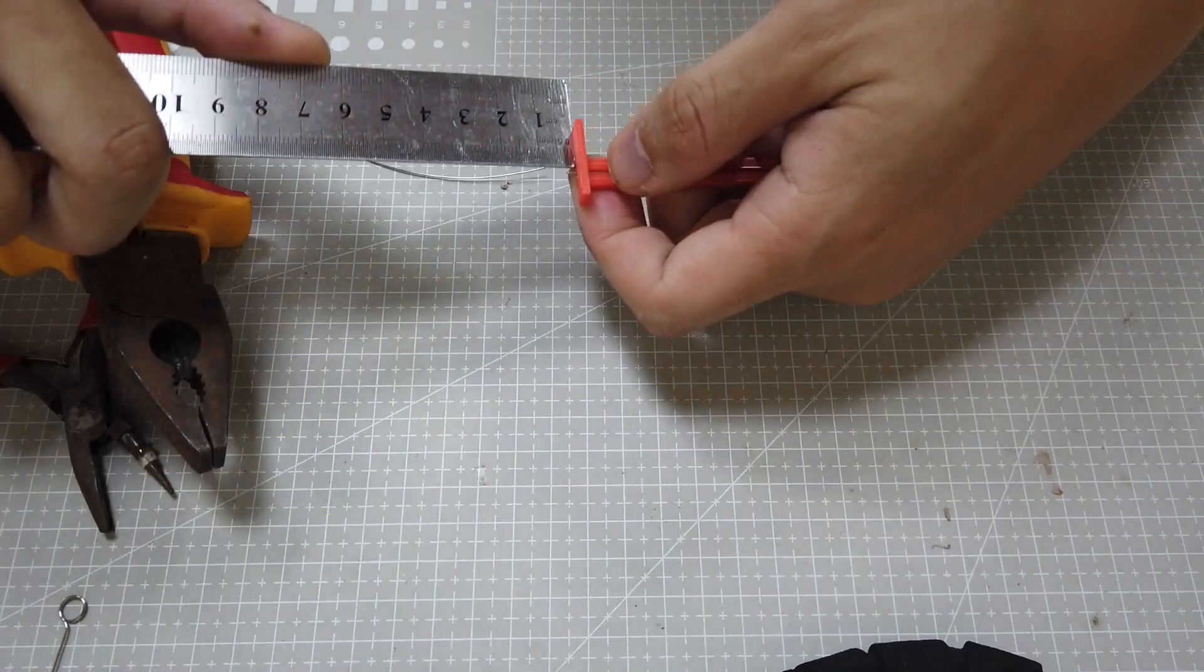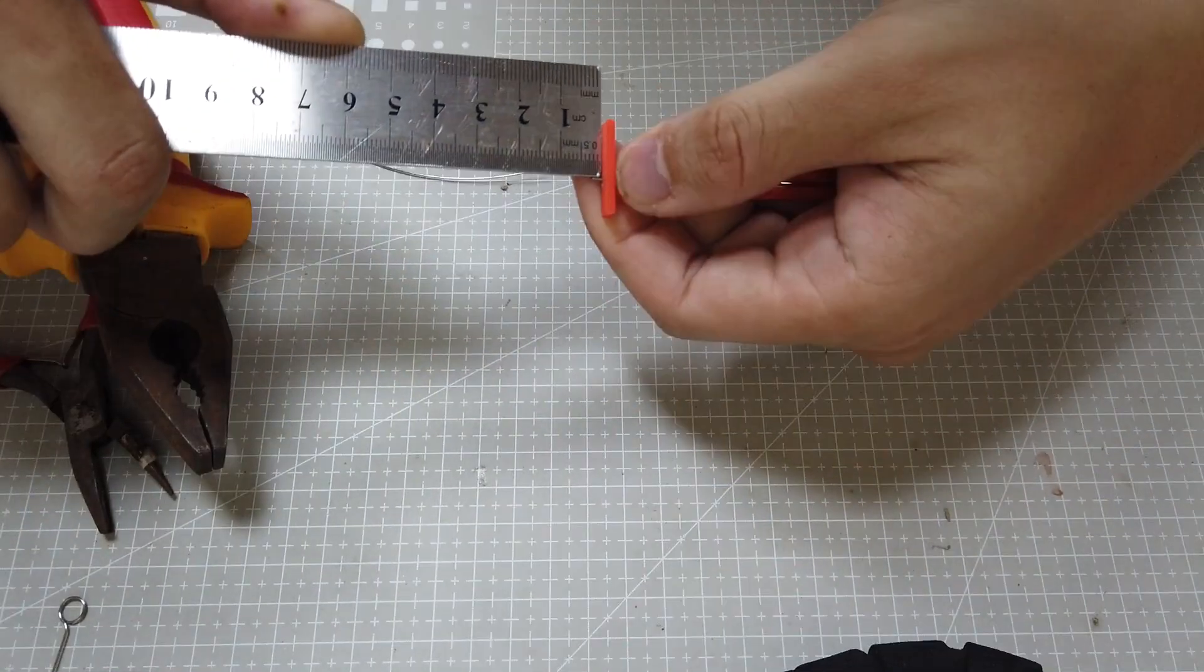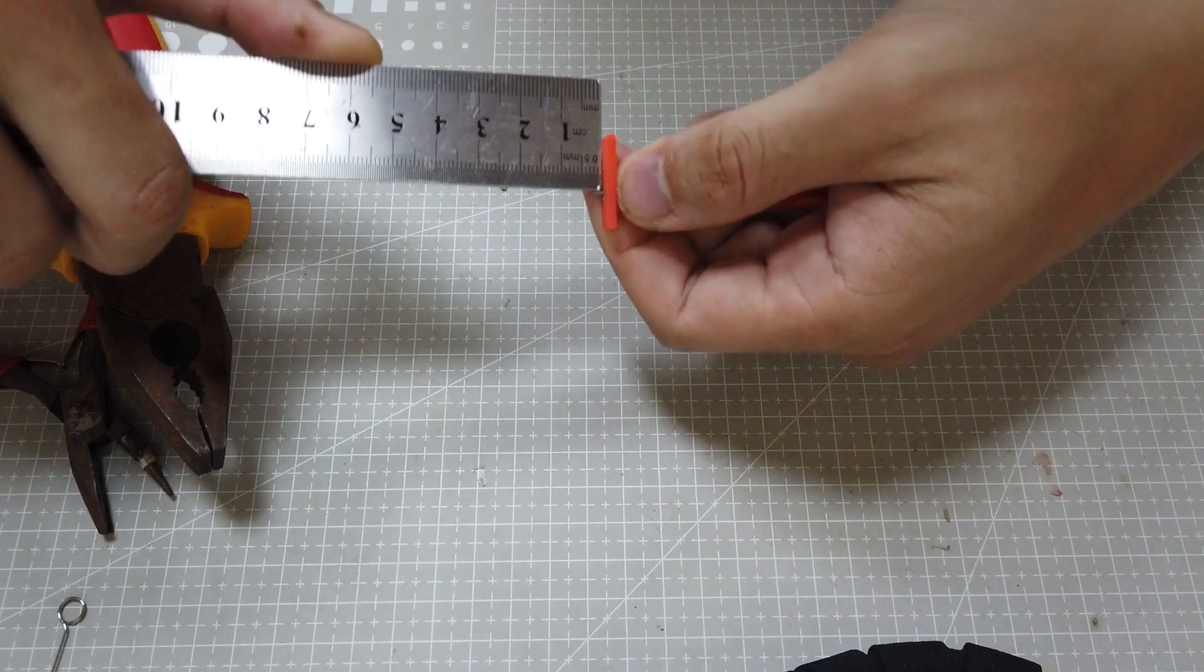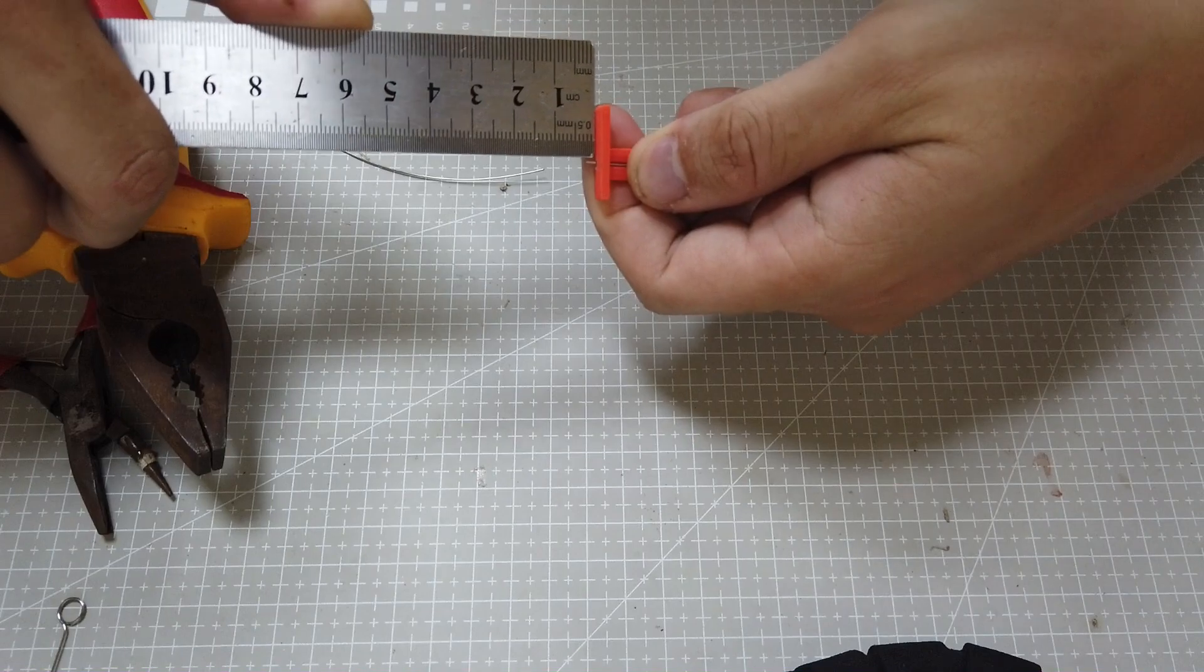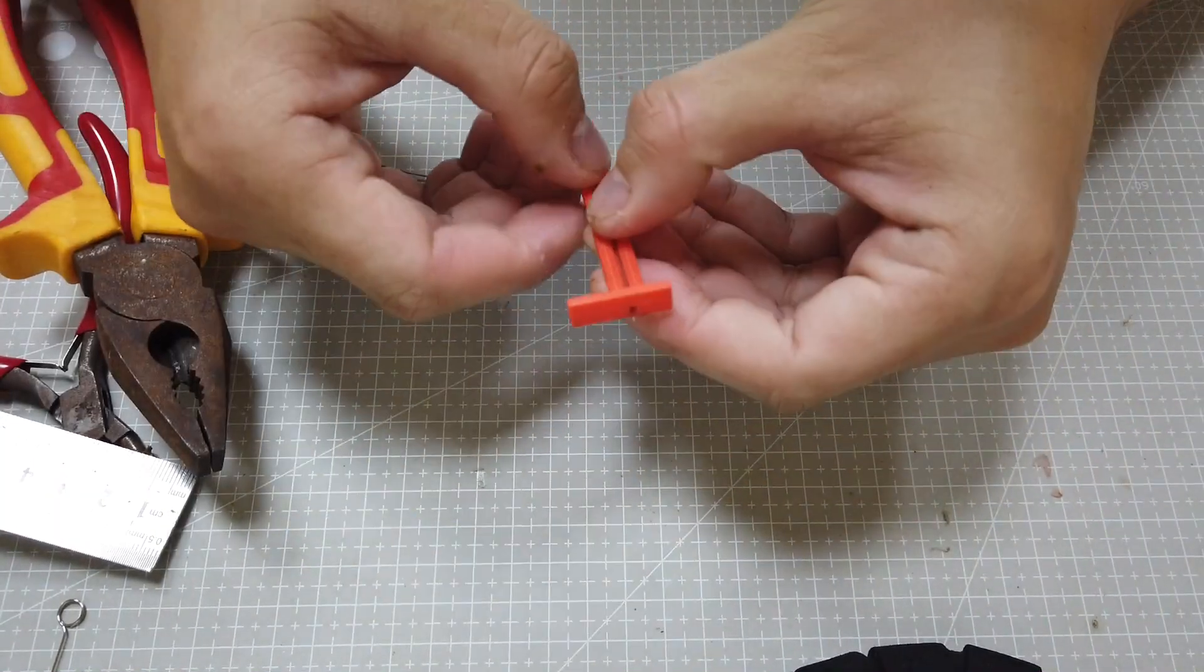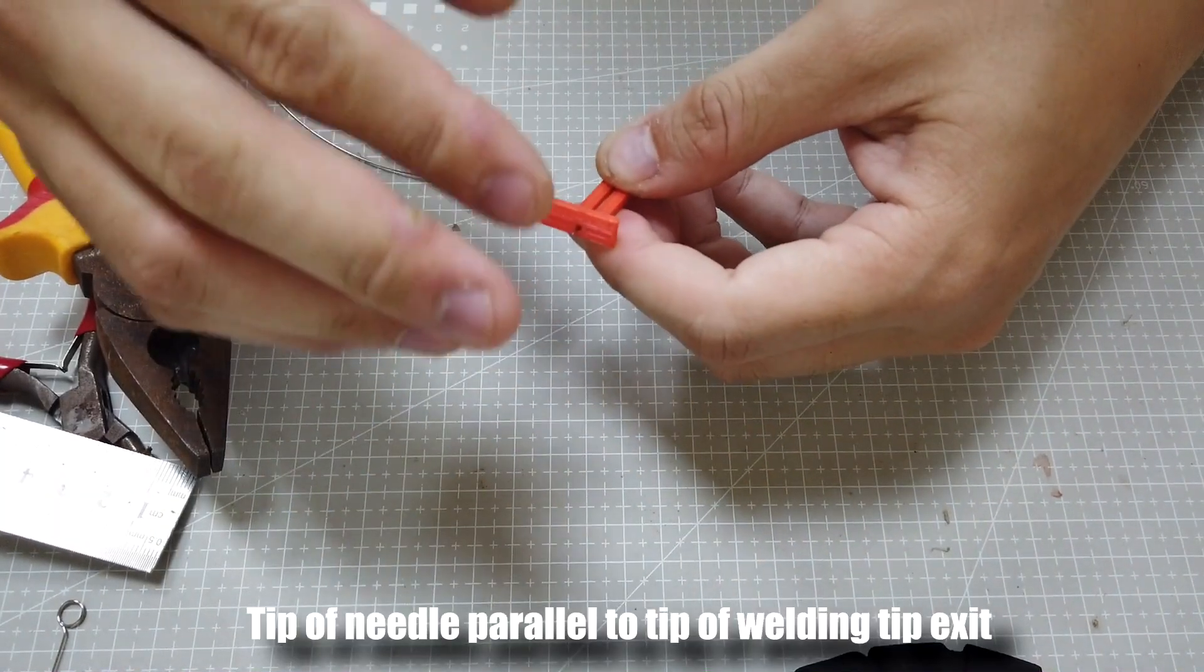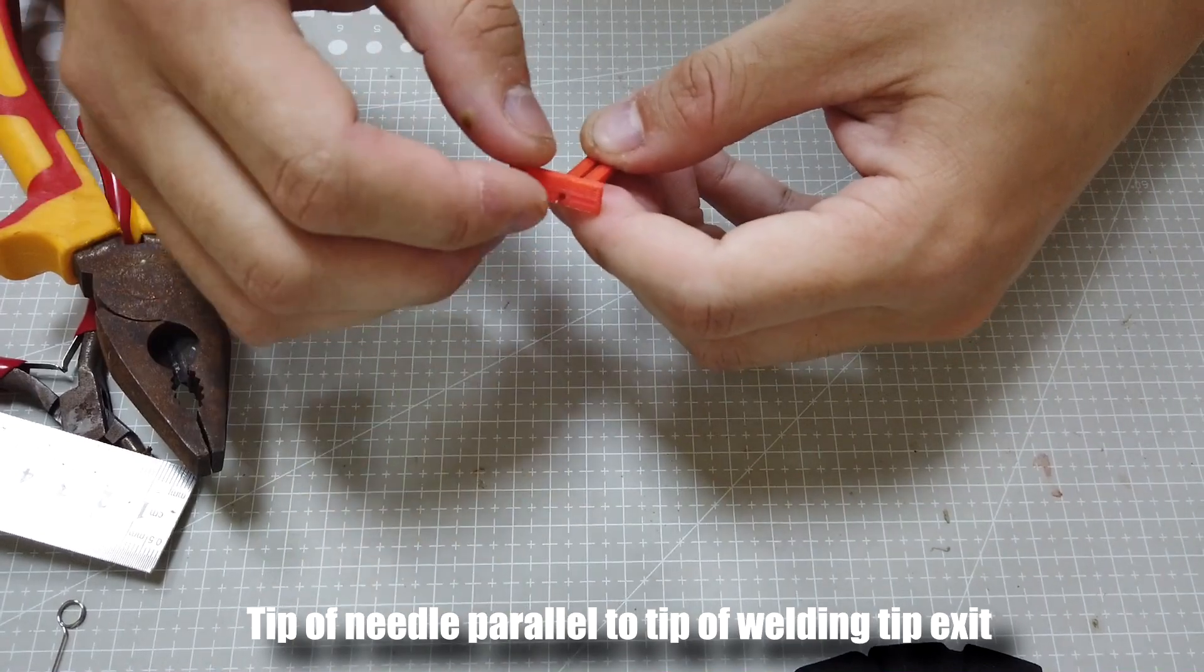Of course, it will be different on your pliers. So you want to have about 2 to 2.5mm steel wire protruding from the wall here, so that when you load it into your welding tip, the tip of the needle is parallel to the tip of the welding tip exit.